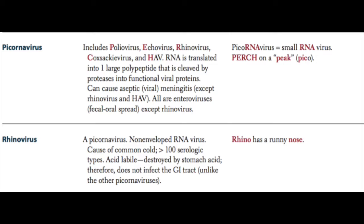Let's begin our discussion of pathogenic RNA viruses starting with the picornaviruses. Here we have polio, echovirus, rhinovirus, coxsackievirus, and hepatitis A virus. The RNA from the picornaviruses is translated into one long polypeptide and then cleaved by proteases into functional viral proteins. Picornaviruses are known to cause aseptic or viral meningitis, except for rhinovirus and hep A. The name 'picorna' means small RNA viruses.